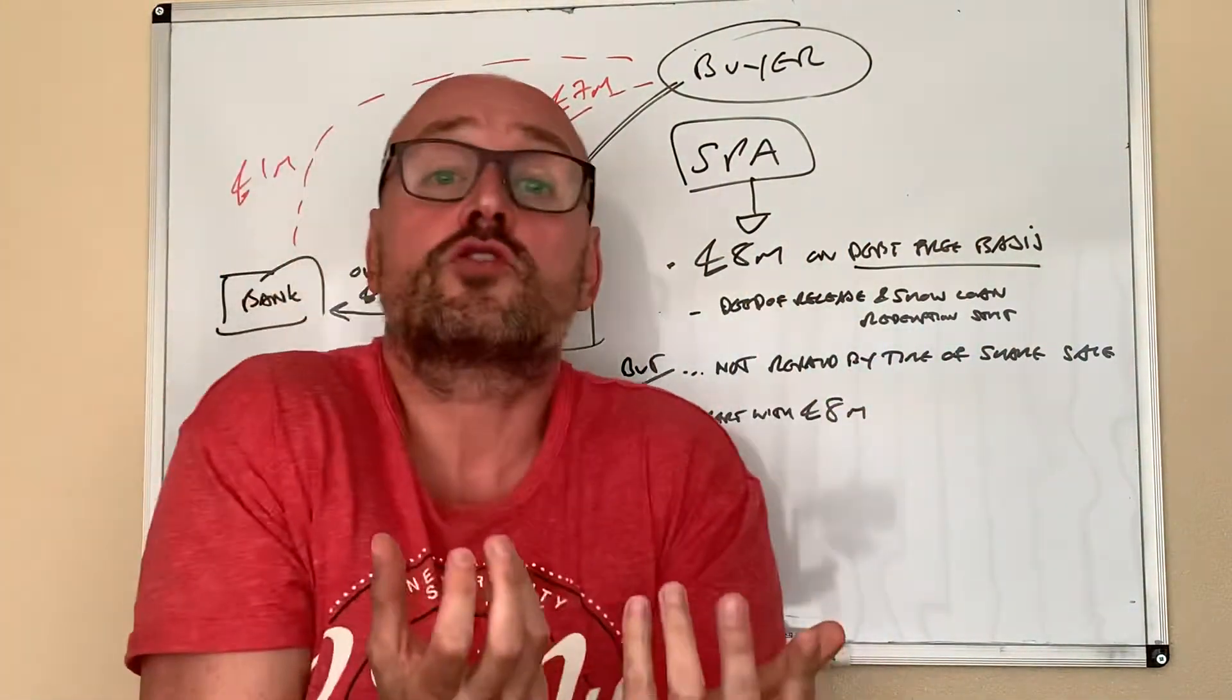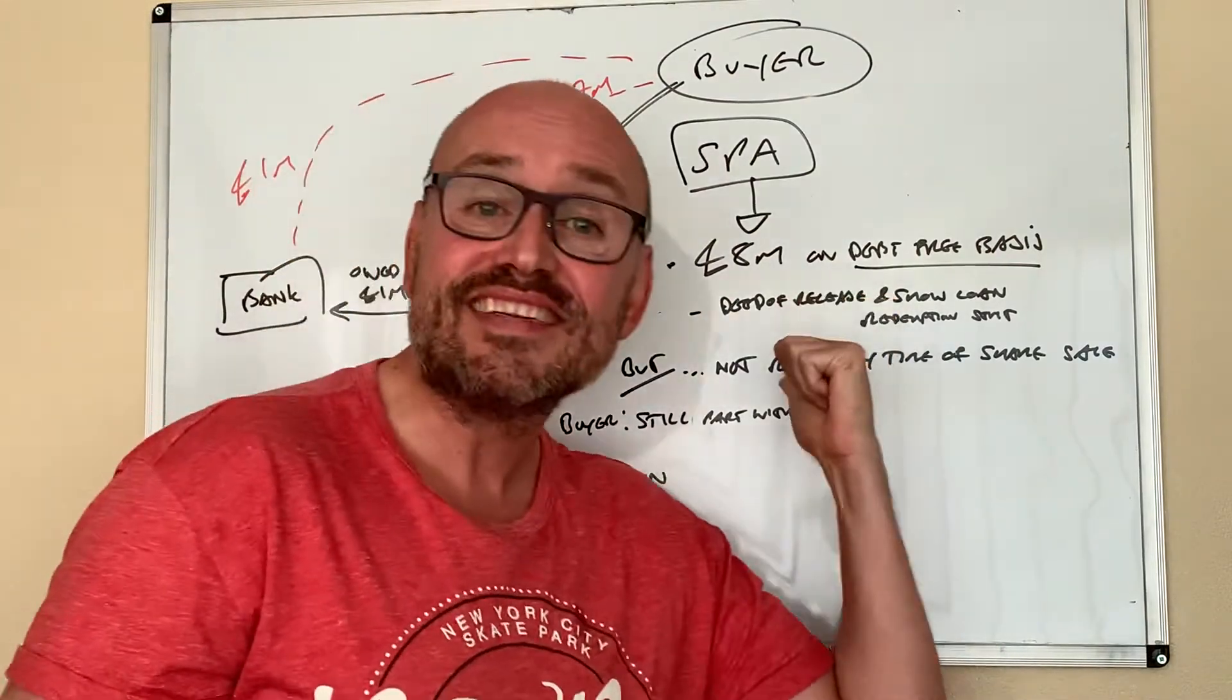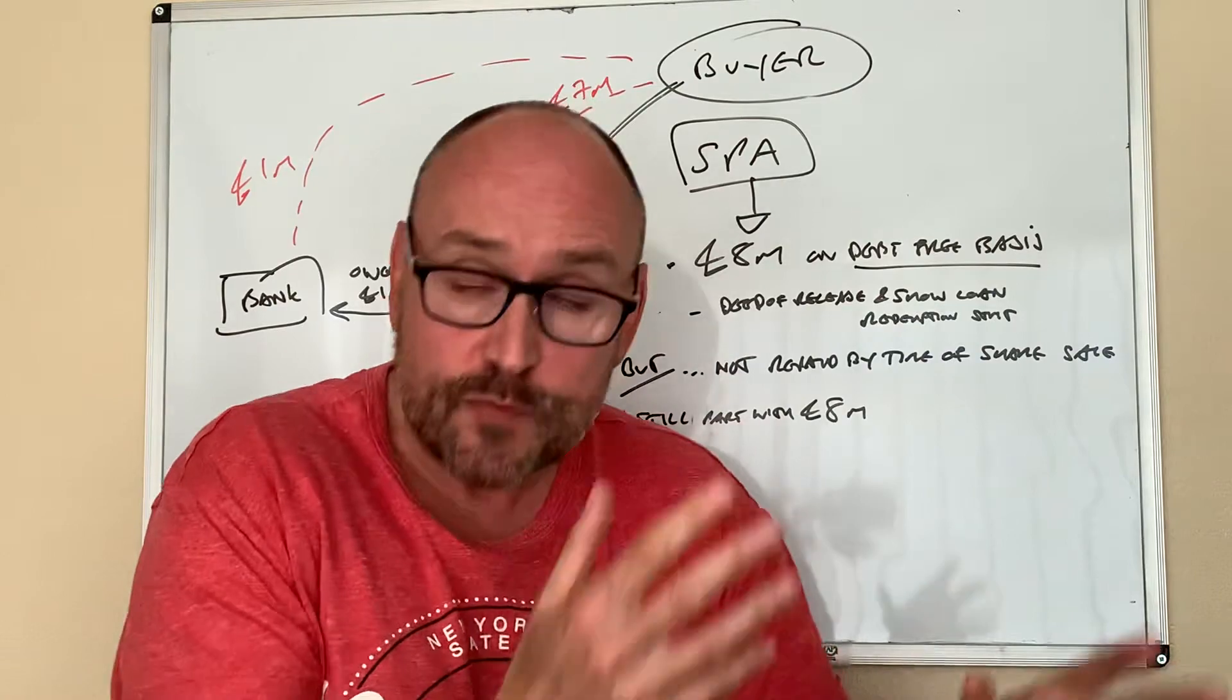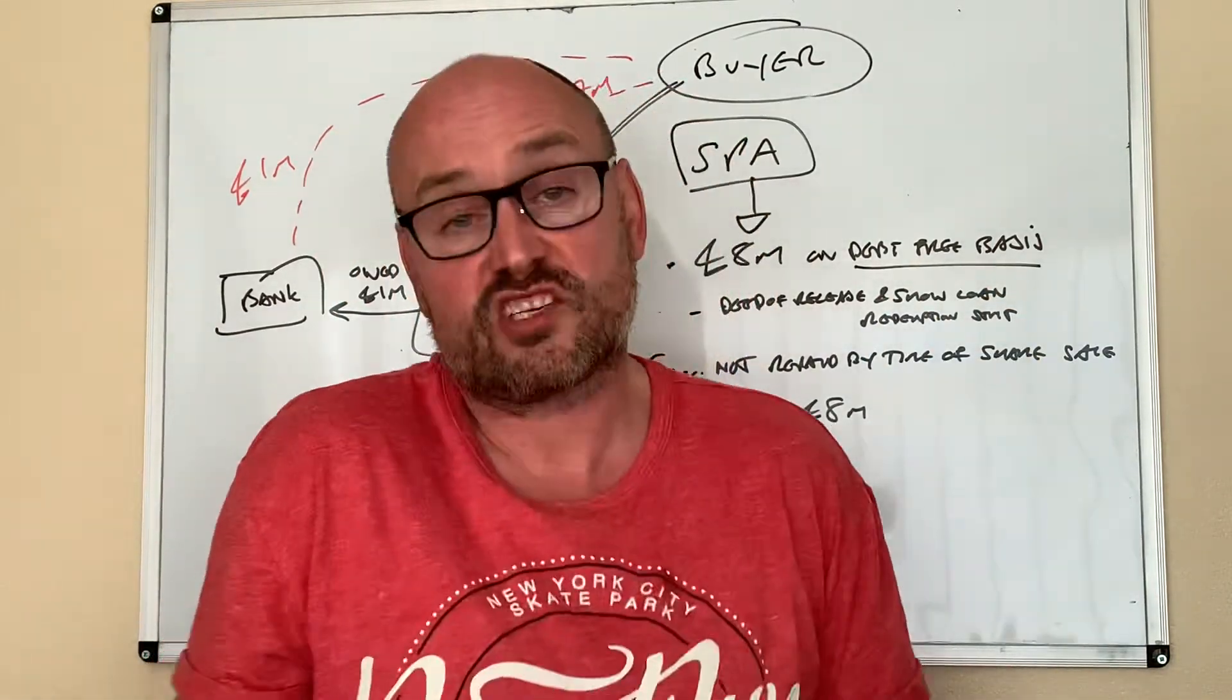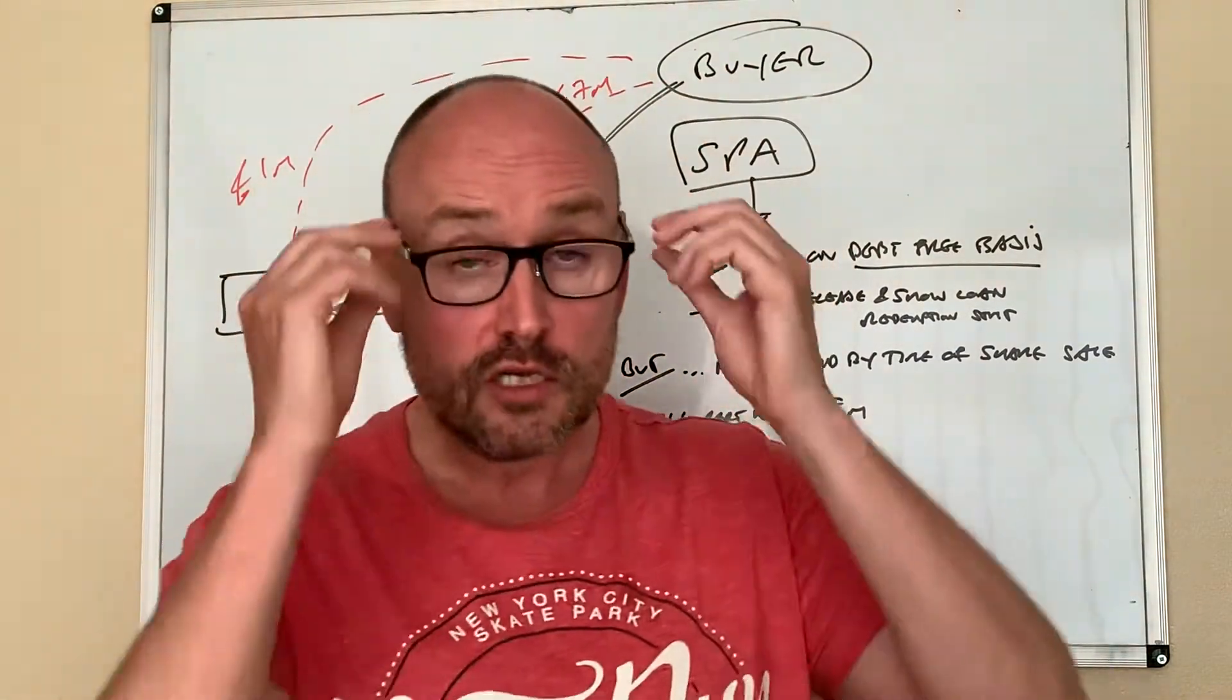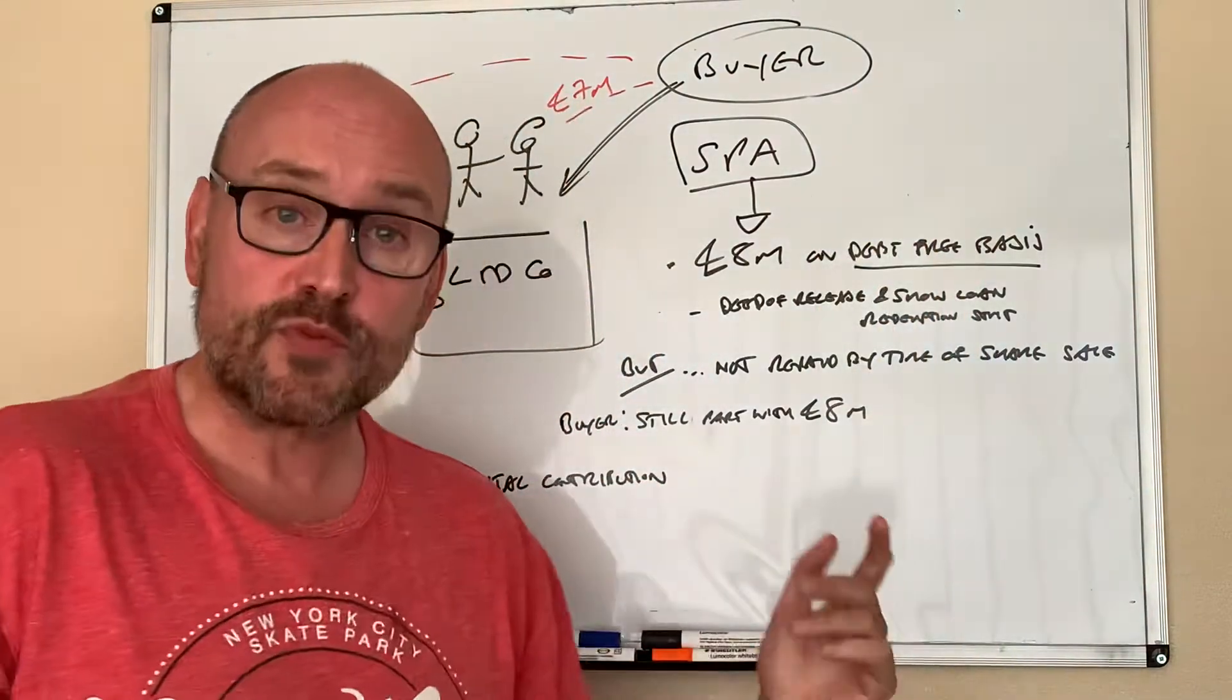Now, and it also said that the buyer wants to see a deed of release to show that the loan is being discharged and a redemption statement. So basically it's proof, which makes sense, stacks up, you sort of think you would expect if you were the advisor for the buyer, that's what you'd want. So this was all written in the SPA.